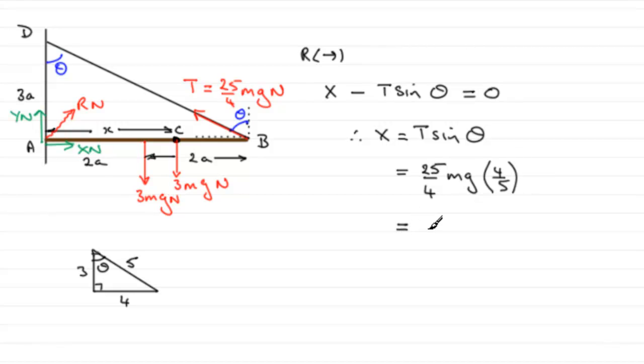And we can work this out because we can see that the 5 cancels into the 25 five times, the fours cancel into one another. We see that X equals 5mg, and that's what we had to show.